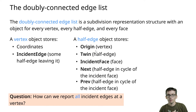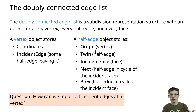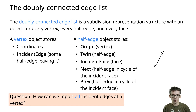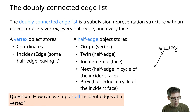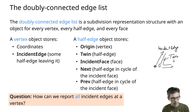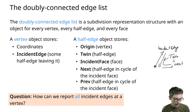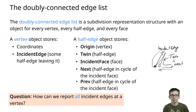For example, given a vertex, how do you report all incident edges? You take the one stored incident edge, then ask it for its twin. That twin brings you back to that vertex, and you follow the twin to the next half edge along the face — that's your next incident edge. Then ask that half edge for its twin, and so on, until you're back at your original half edge. That's just one example showing this is enough in terms of what we need to store.